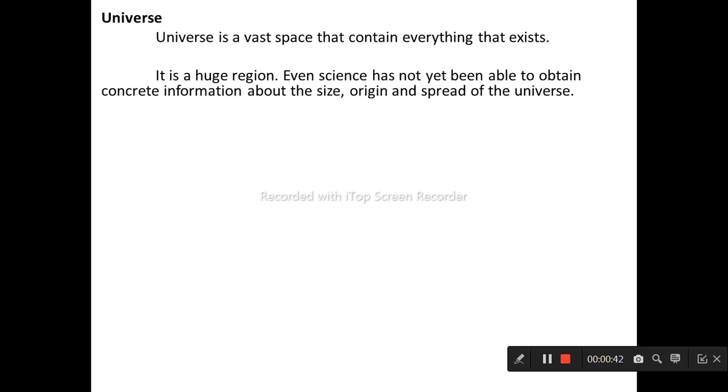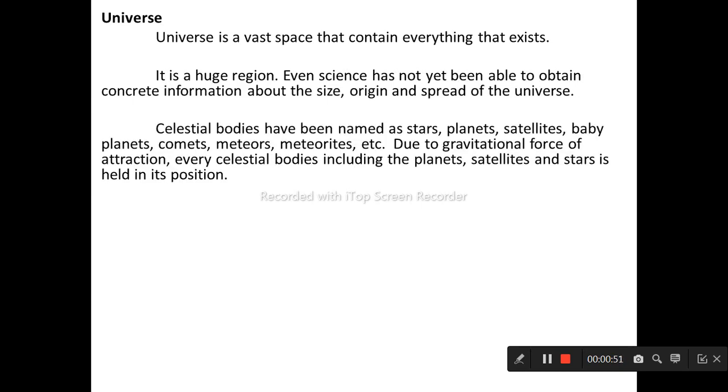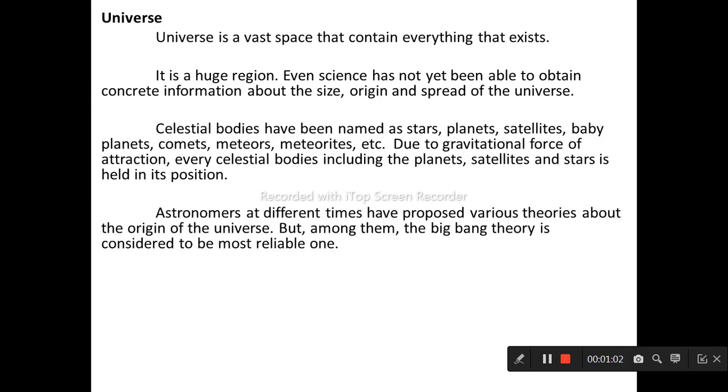We have discussed various celestial bodies in previous years. The vast area around us is called the universe. There are many celestial bodies in the universe. A group of many stars forms a galaxy. The solar system is located in the Milky Way galaxy. The universe is a huge region. Even science has not yet been able to obtain concrete information about the size, origin and spread of the universe.